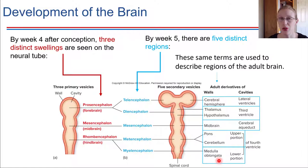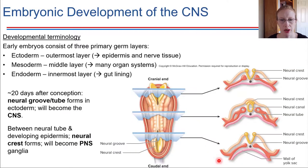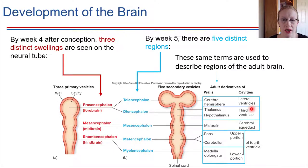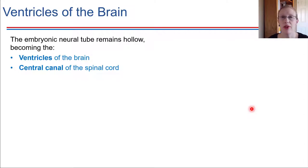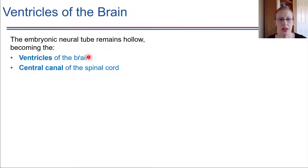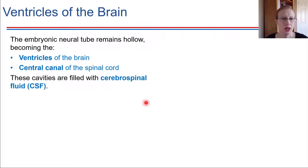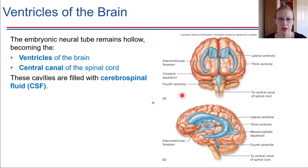One interesting thing about that neural tube: in embryonic development, you can see that it's hollow, and it actually stays hollow all the way into adulthood. That hollow cavity is going to become what we call the ventricles and the central canal of the nervous system. The ventricles of the brain are spaces in the brain that have cerebrospinal fluid. The central canal is the hollow core of the spinal cord, and it also has cerebrospinal fluid. In an adult brain, the ventricles are the open spaces shown in blue that contain cerebrospinal fluid.